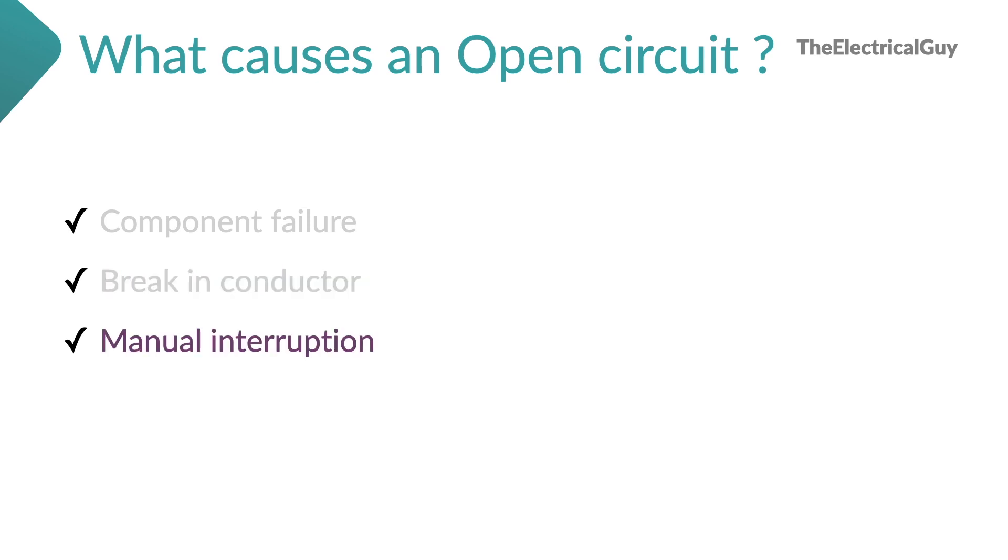Manual interruption we just saw. We can do this just by simply turning off the switch. We can also take example of circuit breaker. If we are opening the circuit breaker for maintenance purpose, we are creating an open circuit manually.